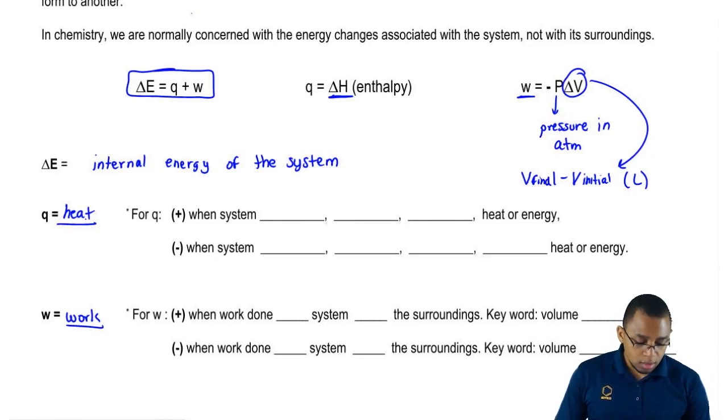We're going to say that Q, it can be positive when we say that the system gains, takes in, or absorbs heat or energy from the surroundings.